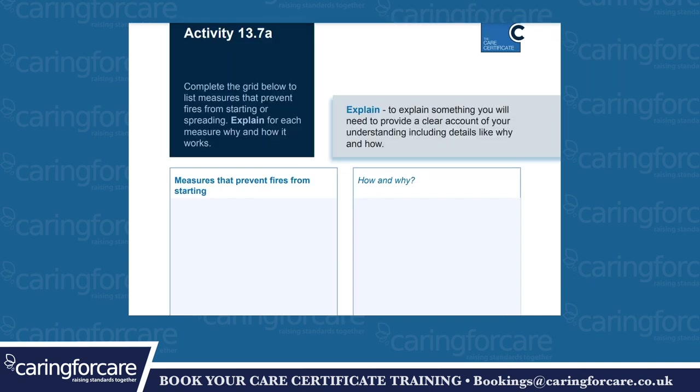Activity 13.7a: complete the grid below to list measures that prevent fires from starting or spreading. Explain for each measure why and how it works. To explain something you will need to provide a clear account of your understanding, including details like why and how. Measures — measures that prevent fires from starting, how and why.